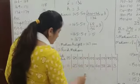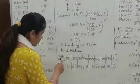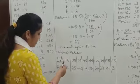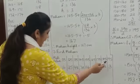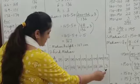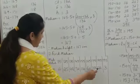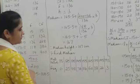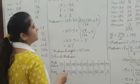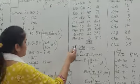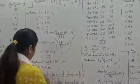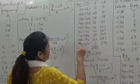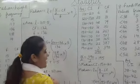Here we have a table showing the mid values or the class marks of the class intervals along with the frequencies, and we are asked to find the median of this data. Using the class marks or mid values, we need to first generate a column showing the class intervals.